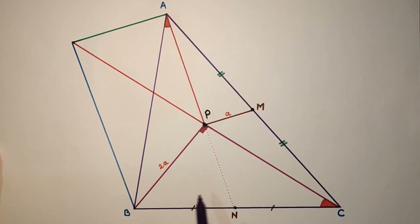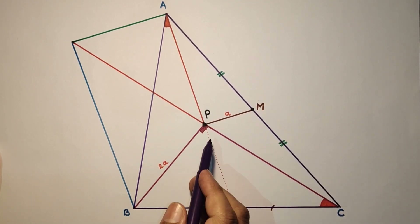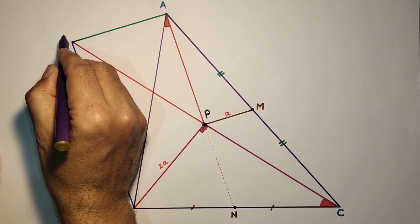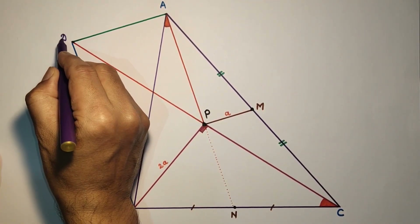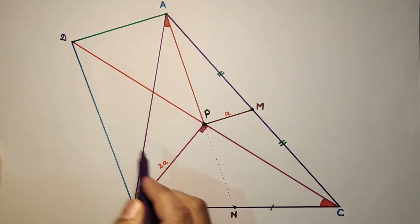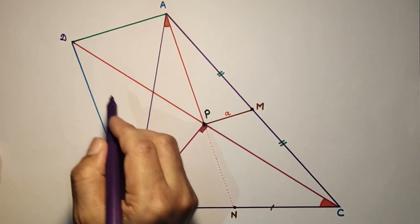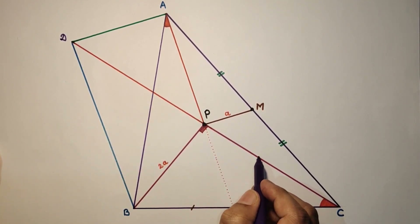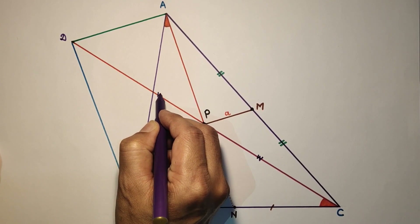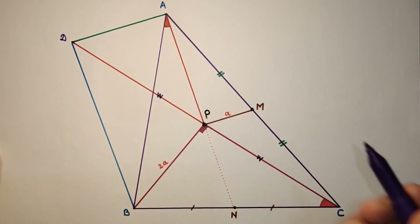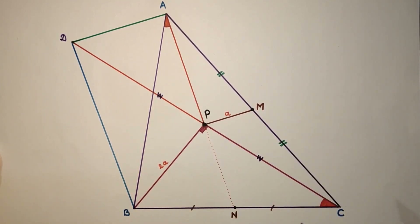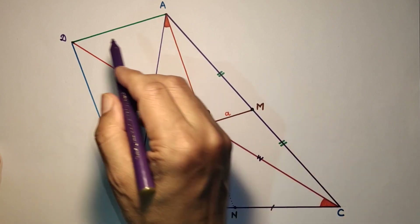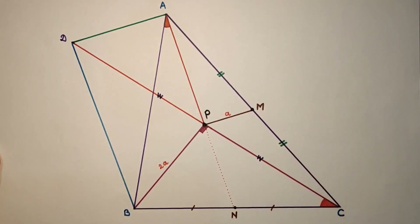CP is extended up to D such that CP is equal to PD, and BD and AD are joined.